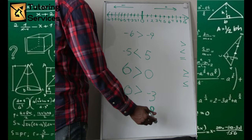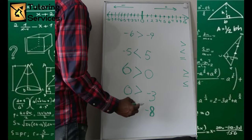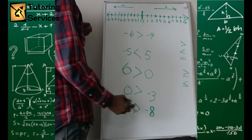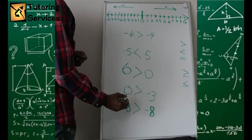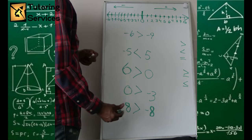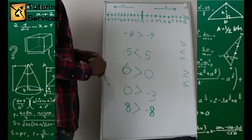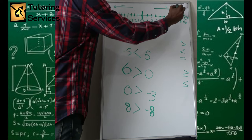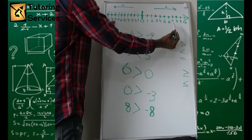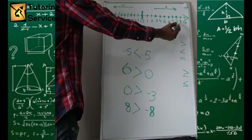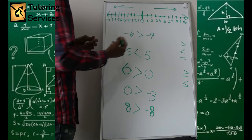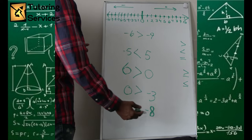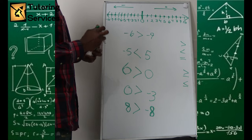Finally, let's compare eight and negative eight. Eight is a positive number and negative eight is a negative number, so we know the positive number is going to be greater. It doesn't matter that they deal with the same number — one is positive and one is negative. Negative eight is way more in the negative direction, so negative eight is less than eight, or eight is greater than negative eight.